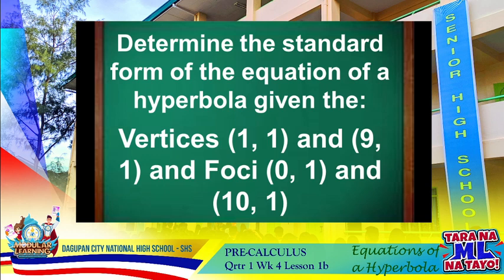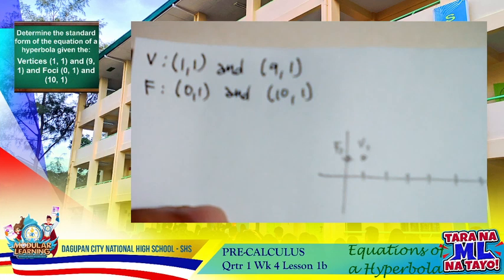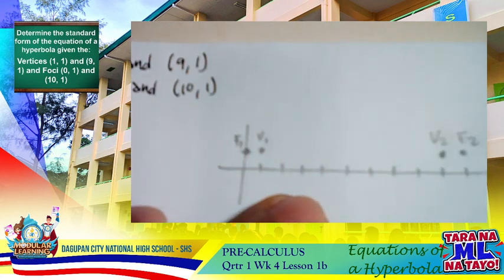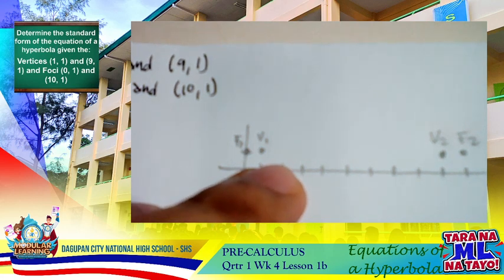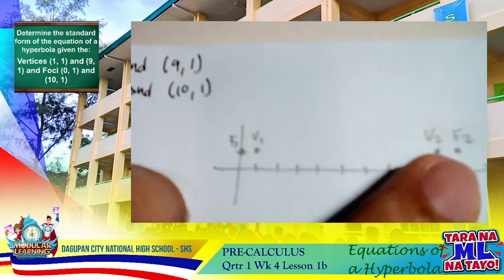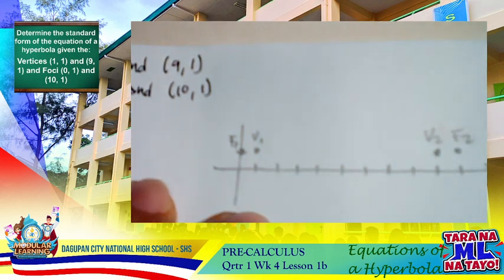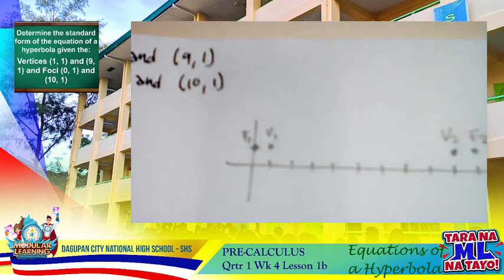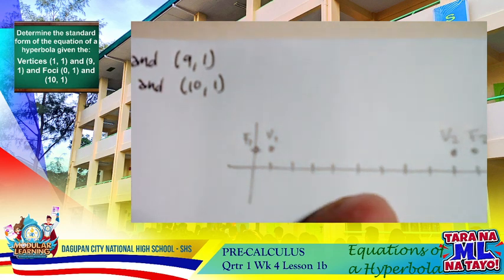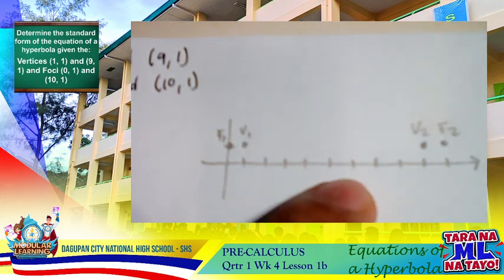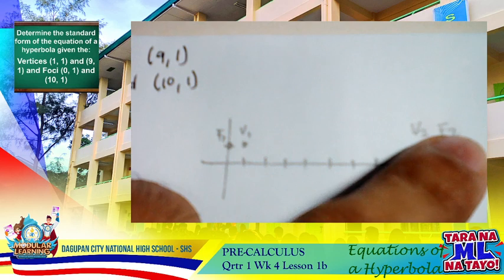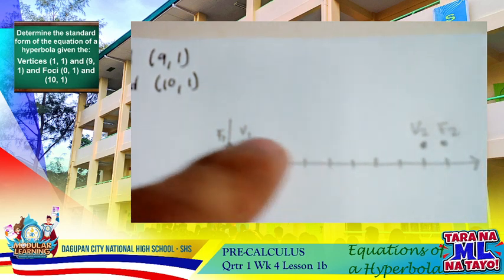We need to show the relationship of the given vertices and foci in a coordinate system. After plotting F₁, F₂, V₁, and V₂, we can observe from the graph that this hyperbola is horizontal, because the transverse axis is parallel with the x-axis.